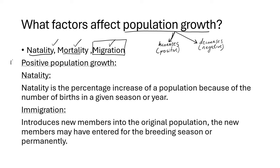For us to have a positive population growth — meaning for the population to increase — we look at natality. Natality always increases the population. If more species are being produced, that will increase the population, resulting in a positive population growth. Natality is the percentage increase of a population because of the number of births in a given season or year. It is the factor that contributes to positive population growth.